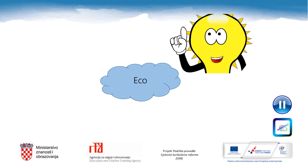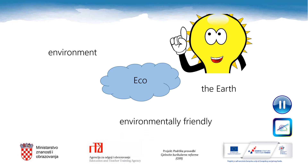Here is my mind map. The earth, because it is our planet. Environment, because it is the world in which people, animals and plants live. Environmentally friendly, because it means no harm to the environment. Green, because it is the color of the trees and the grass. No pollution, because it means it is clean. Organic — it means natural, without chemicals.